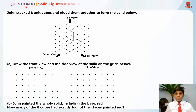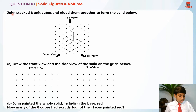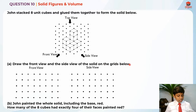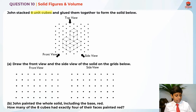This is question 10 and this question is testing us on solid figures and volume. So first we have to read the question. John stacked 8 unit cubes and glued them together to form the solid below. So part A: draw the front view and the side view of the solid on the grid. So the key information is 8 unit cubes, and they are only telling us to draw the front view and the side view.